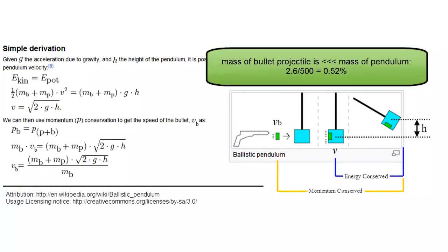Also note the mass of the projectile at 2.6 grams is only about one half of 1% of the 500 gram pendulum mass. This helps a great deal for this case, and the equations give very good approximations to the SolidWorks motion study.